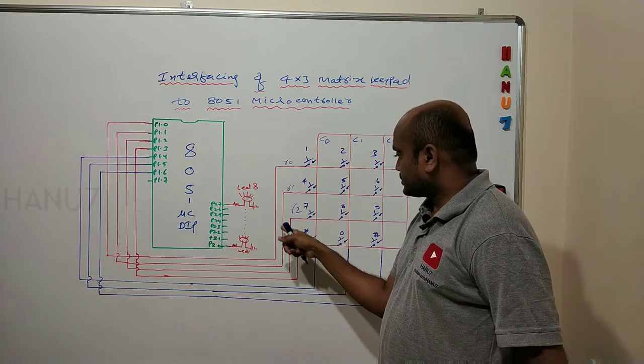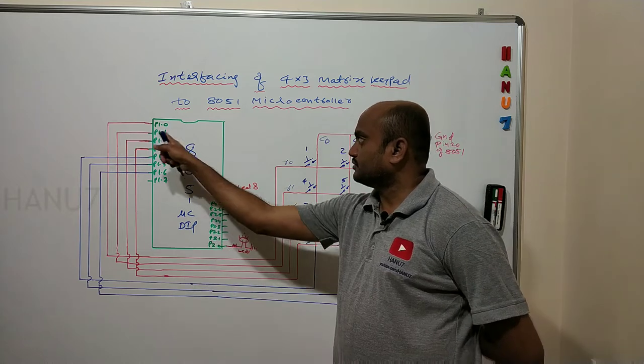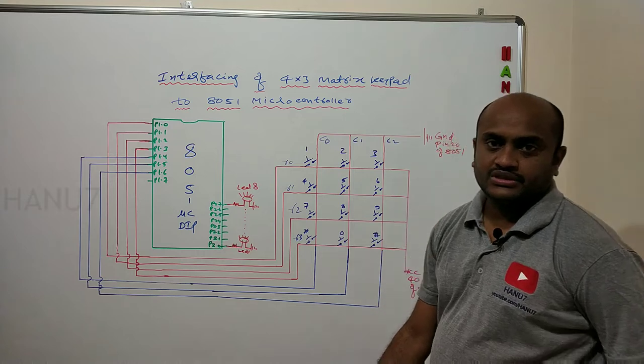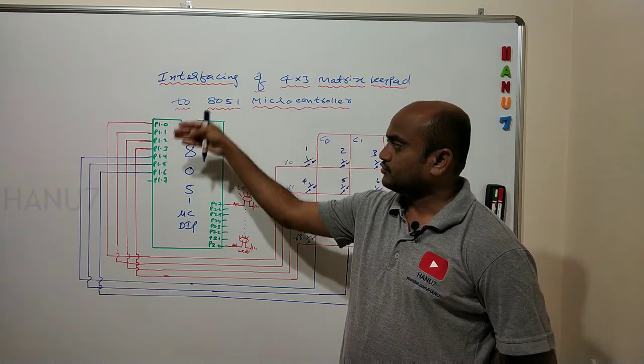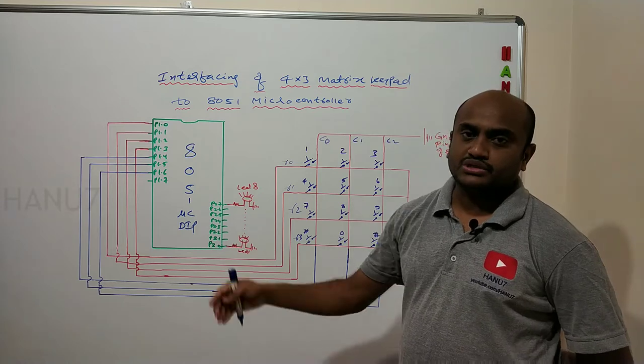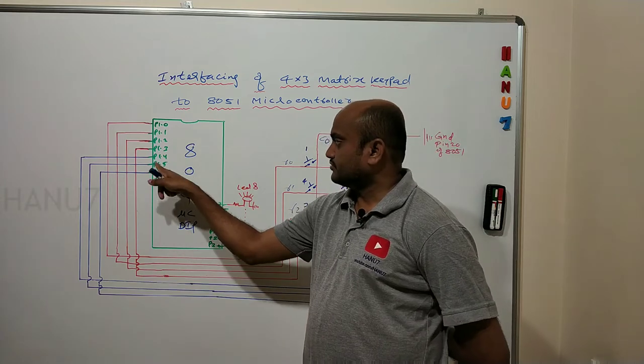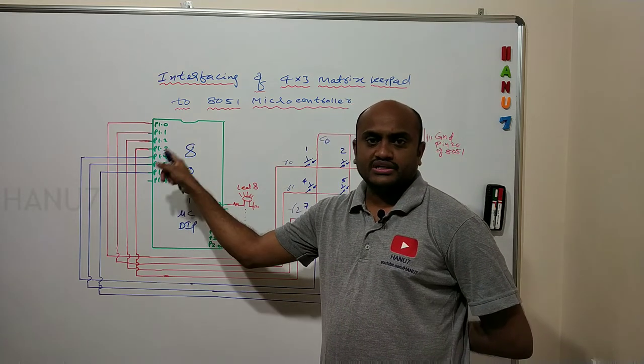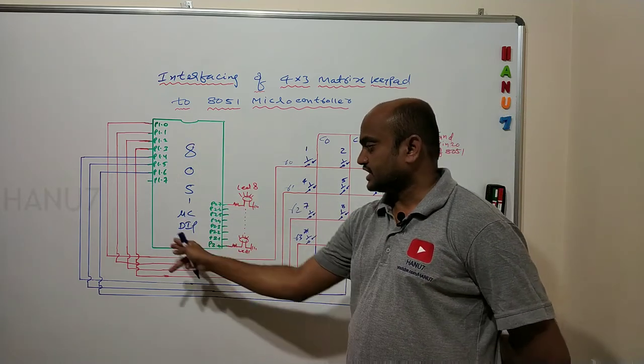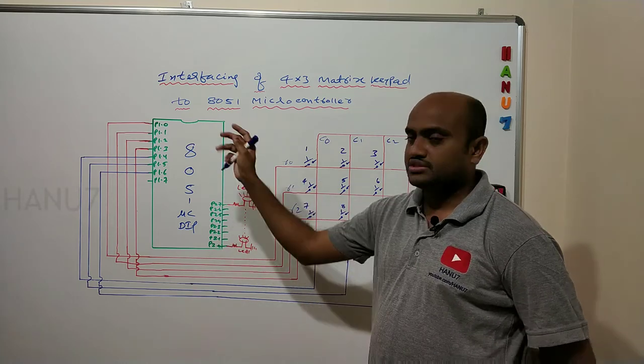I have connected row 0 to P1.0, row 1 to P1.1, row 2 to P1.2, and row 3 to P1.3. So rows are connected to the first 4 pins of the microcontroller: P1.0, 1.1, 1.2, and 1.3. Columns are connected as follows: column 0 to P1.4, column 1 to P1.5, and column 2 to P1.6. This is the interfacing of the 4 by 3 matrix keypad.